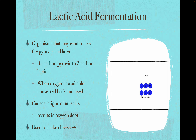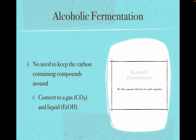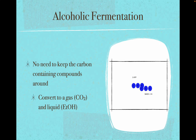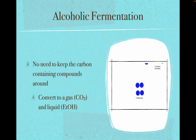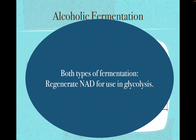In alcoholic fermentation, there's no sense converting pyruvate to another three-carbon molecule. Organisms break glucose into two pyruvic acids, get their ATP, and then break a carbon dioxide off the pyruvate, giving you carbon dioxide gas. The two-carbon molecules left are ethyl alcohol — ethanol. If we are baking bread, we collect the carbon dioxide for rising dough. If we are making beer, wine, or spirits, we collect the ethanol. Both types of fermentation regenerate NAD and get rid of pyruvate to keep glycolysis going.